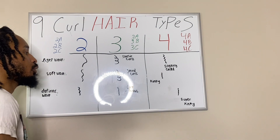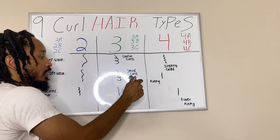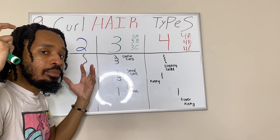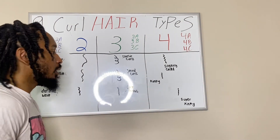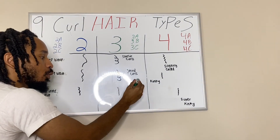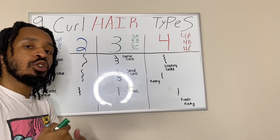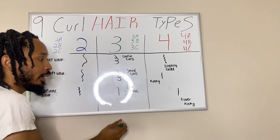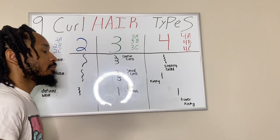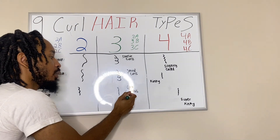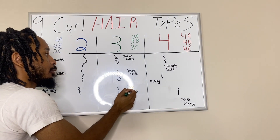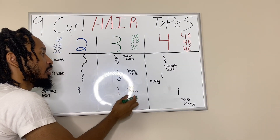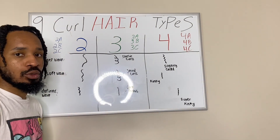Now if you go down to the 3B and 3C, you're going to see a more compact curl, more spiral curl, more corkscrew curl. It's still type 3 hair, but you will be able to tell a difference between the 3B, 3C, and the 3A for sure.